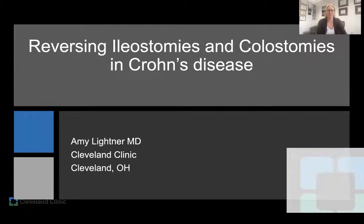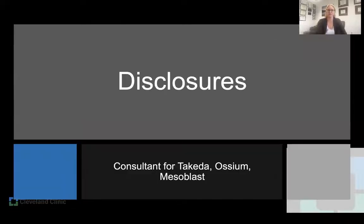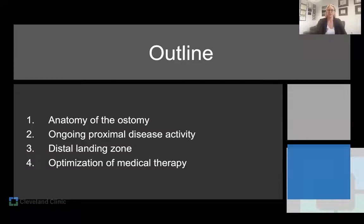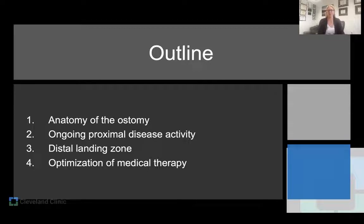Thank you for the opportunity to present. I'm going to be talking about reversing ileostomies and colostomies, specifically in the setting of Crohn's disease, and what are the things you need to specifically think about when reversing a stoma in the setting of Crohn's. The four major points I'm going to talk about today are anatomy of the stoma, assessment for any ongoing proximal disease activity in the setting of Crohn's, thinking about your distal disease and distal landing zone if you're making a new anastomosis, and then optimization of medical therapies — that's very important to our Crohn's patients.